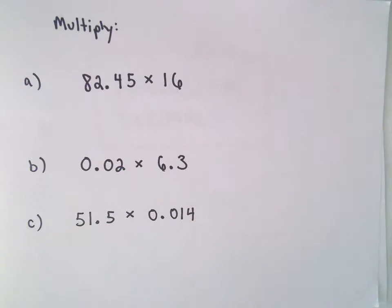All right, here I'm going to look at another example of multiplying decimals. So here we're going to do 0.02 times 6.3.